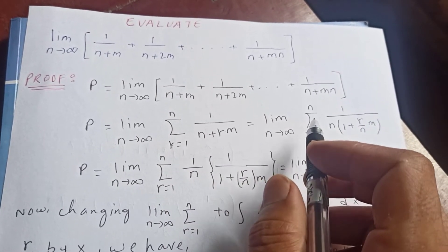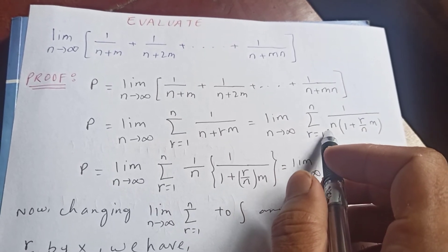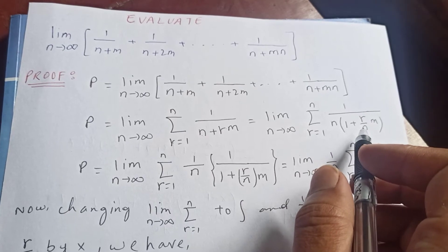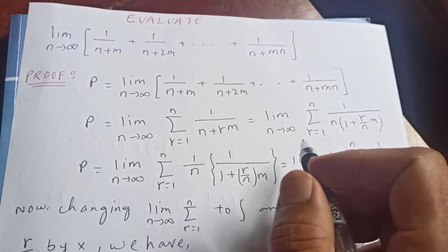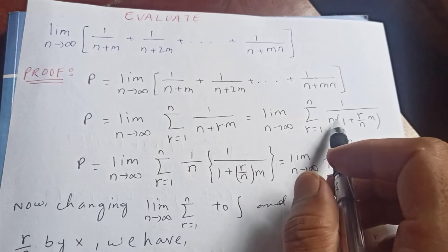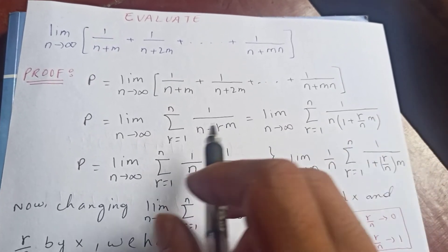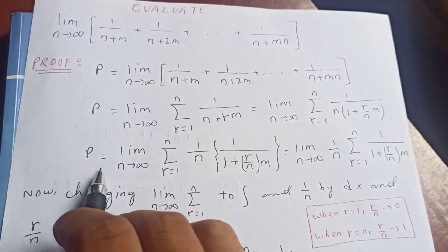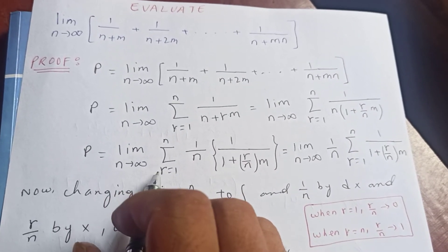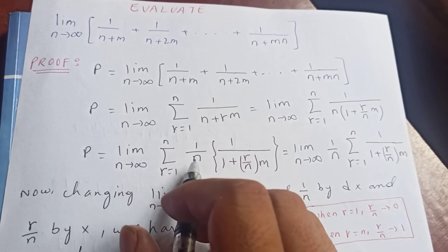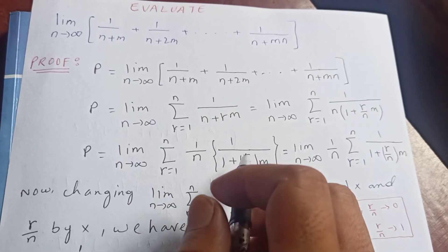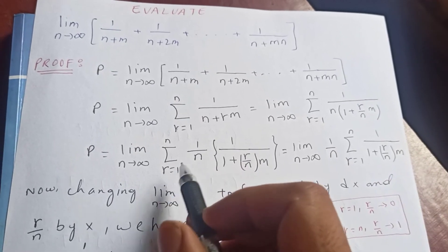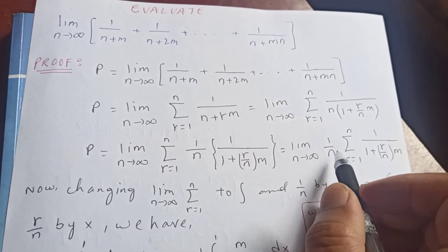Now let's factor out n. The limit as n tends to infinity of the sum from r = 1 to n of 1 over n·(1 + r/n·m). If you distribute and expand the bracket you get back the original expression. So P equals the limit as n tends to infinity of the sum from r = 1 to n of (1/n) · 1 over (1 + (r/n)·m).